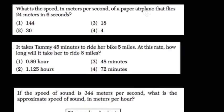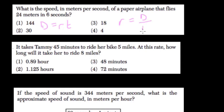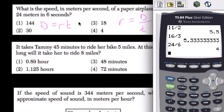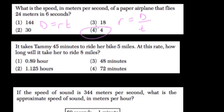What is the speed of a paper airplane that flies 24 meters in 6 seconds? So again, distance equals rate times time. And they want to know speed, that's rate. So rate equals distance over time. Just divide here. Distance divided by time. 24 divided by 6 is 4 meters per second. Choice 4.